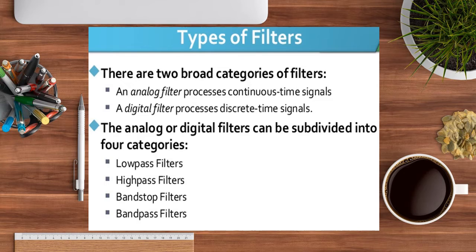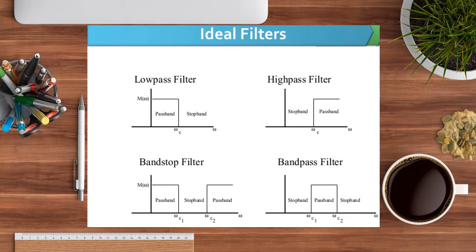Analog and digital filters are each subdivided into four categories: low pass filters, high pass filters, band pass filters, and band stop filters. In the ideal case, we observe how each filter behaves across angular frequency, normal frequency, and cutoff frequency ranges.